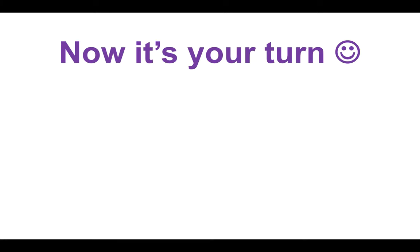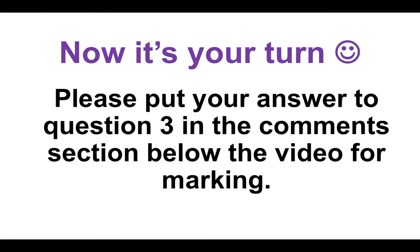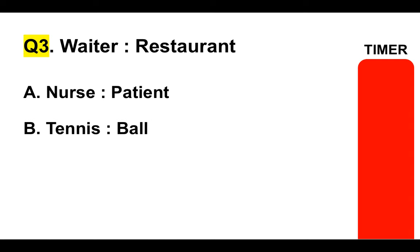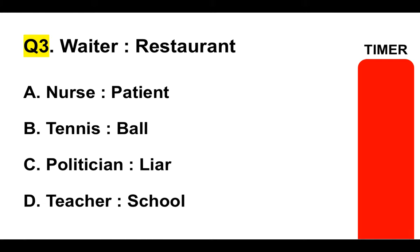Now it's your turn. Please put your answer to question three in the comments section below the video for marking. On the right hand side, I've provided you with a timer — you've got 10 seconds to answer. Question three: waiter and restaurant. Is it A, nurse and patient; B, tennis and ball; C, politician and liar; or D, teacher and school? Put your answer in the comments section below.